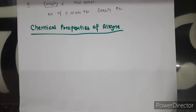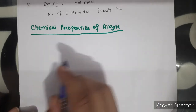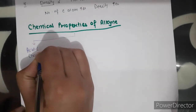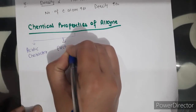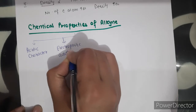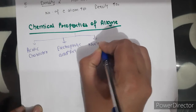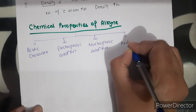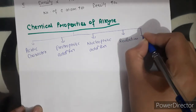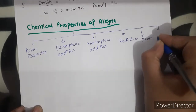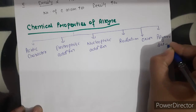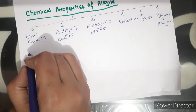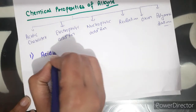Good morning students. Today we will start our next topic, that is chemical properties of alkynes. Alkynes generally show acidic reactions, electrophilic addition reactions, nucleophilic addition reactions, reduction, oxidation, and polymerization reactions. Let's discuss these reactions one by one in detail. The first reaction is the acidic nature of alkynes.